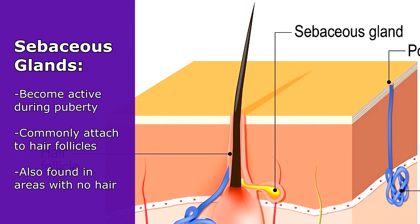Sebaceous oil glands most commonly attach to hair follicles. However, sebaceous glands are also present in some areas without hair, in which case they secrete their sebum through a pore in the skin.